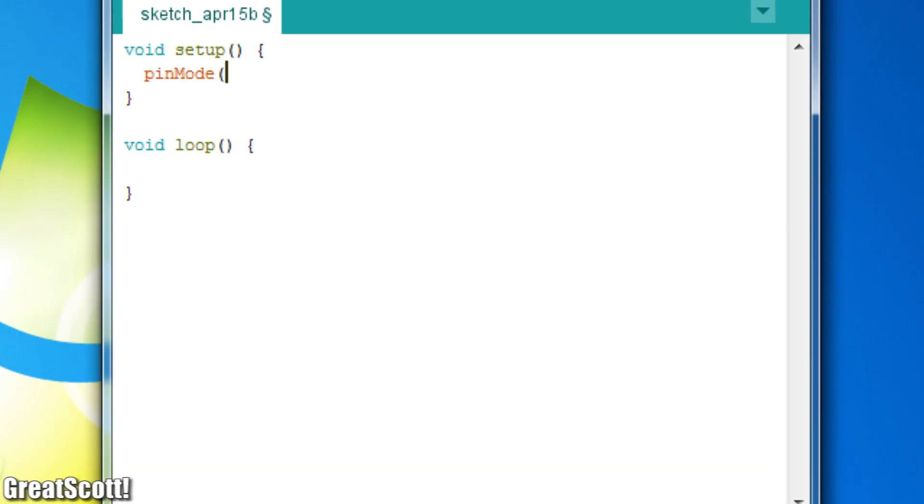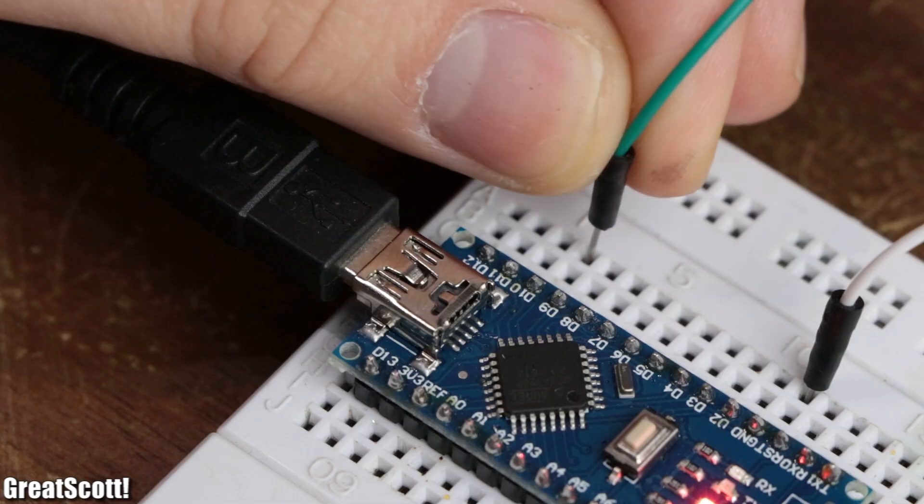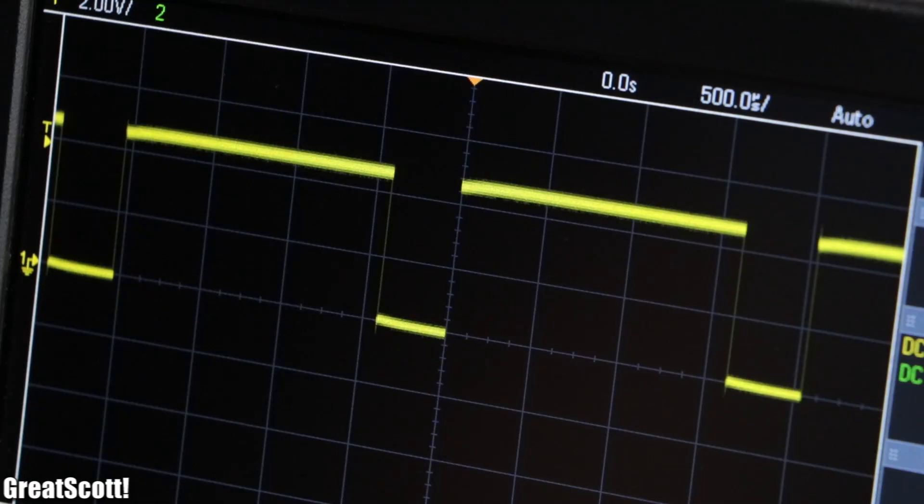OK moving on. Let's say you want to use pin 10 as a PWM output to create an 80% duty cycle. As you can see it works without a problem.